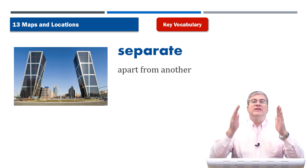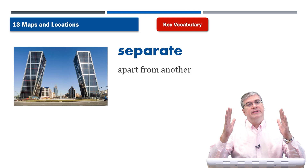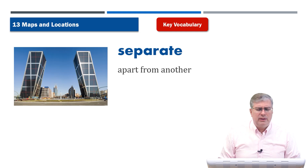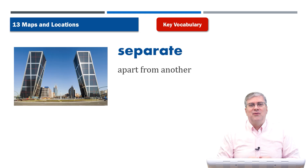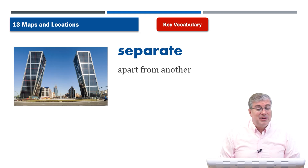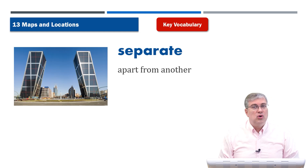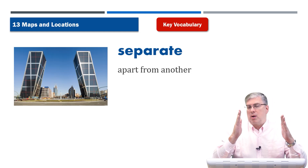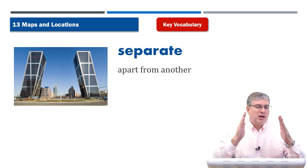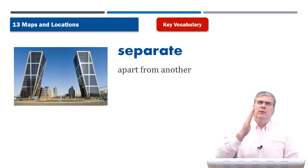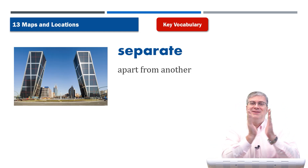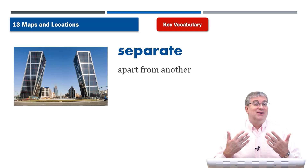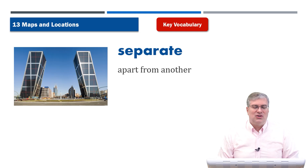Next we have 'separate,' which means apart from each other — not together. Here's a picture of two unusual-looking office buildings. They were probably built by the same architect and look great together, but they're not physically touching each other. They are separate.